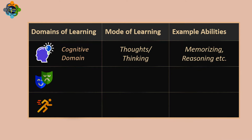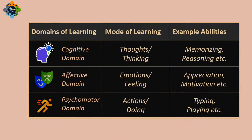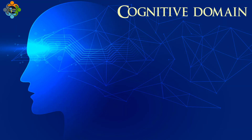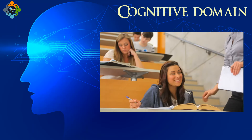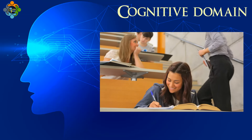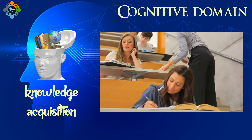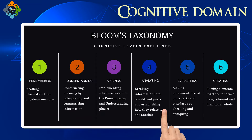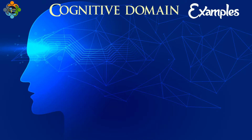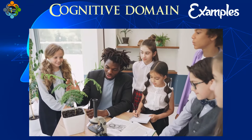It's divided into three domains: cognitive, affective, and psychomotor. Starting with the cognitive domain, which is perhaps the most widely used, this domain focuses on intellectual skills and knowledge acquisition. It involves six levels, starting from simple recall or recognition of facts — known as remembering — to more complex tasks like creating.